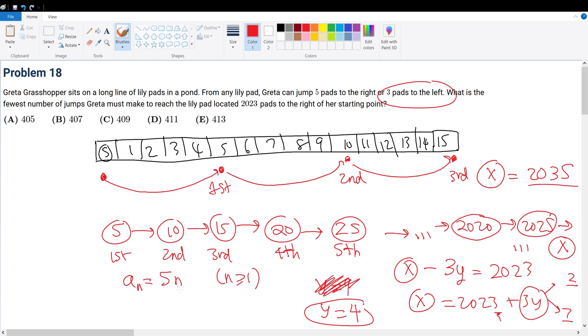So 5n must be equal to 2035, which means n must be equal to 407. 407 jumps will get us to block 2035, but then we must go to the left 4 times, giving us 407 plus 4 equals 411 jumps in total. So that's answer choice D.